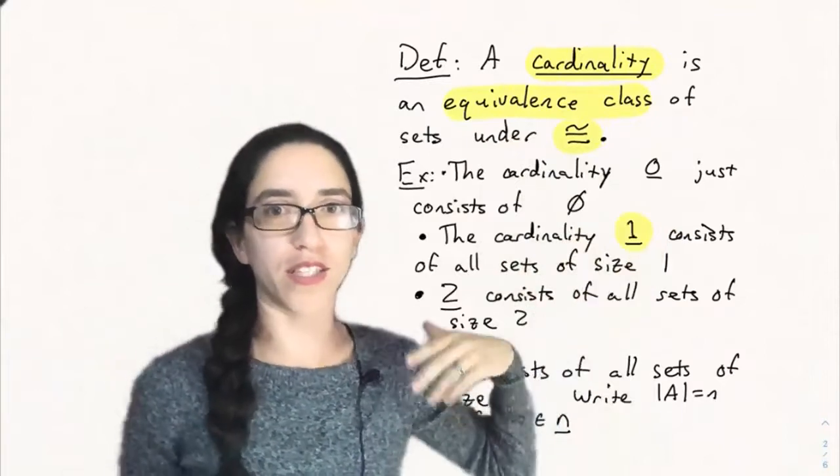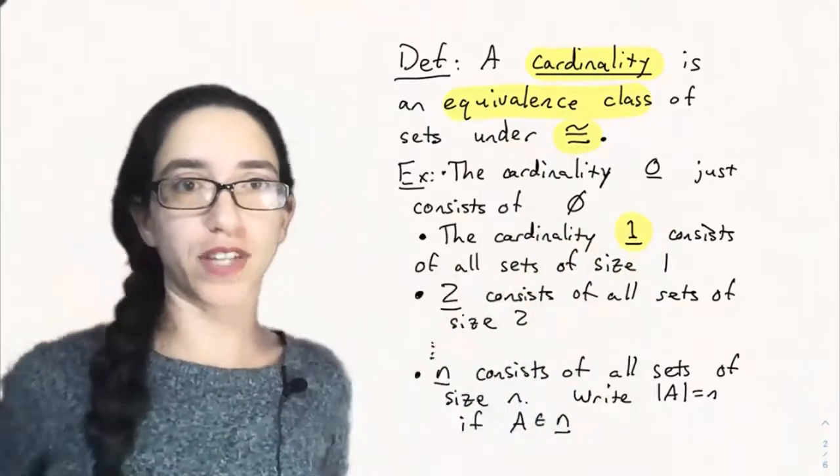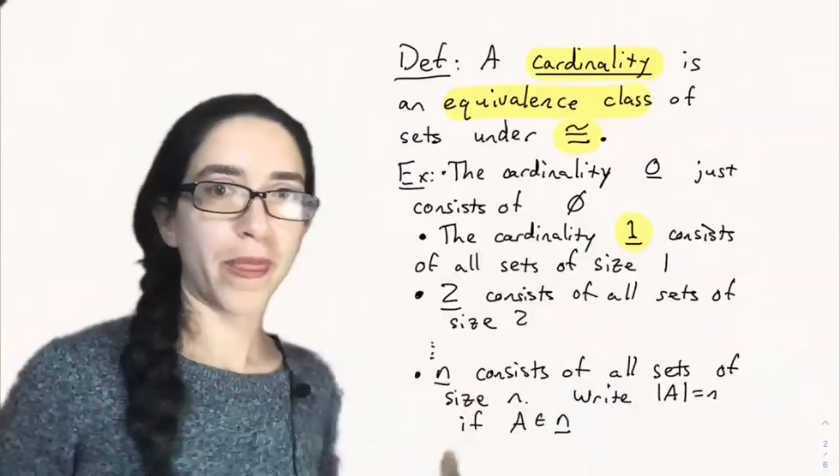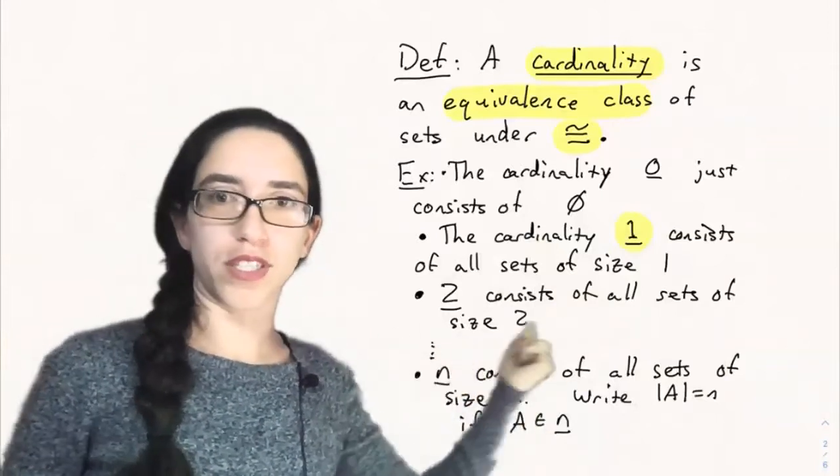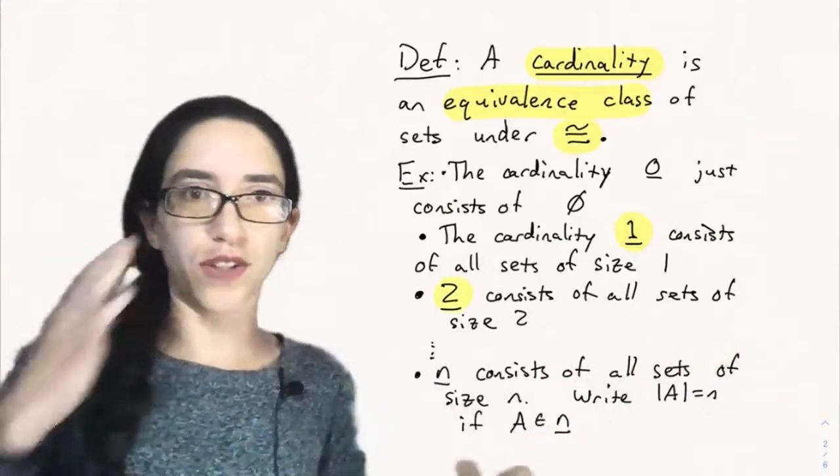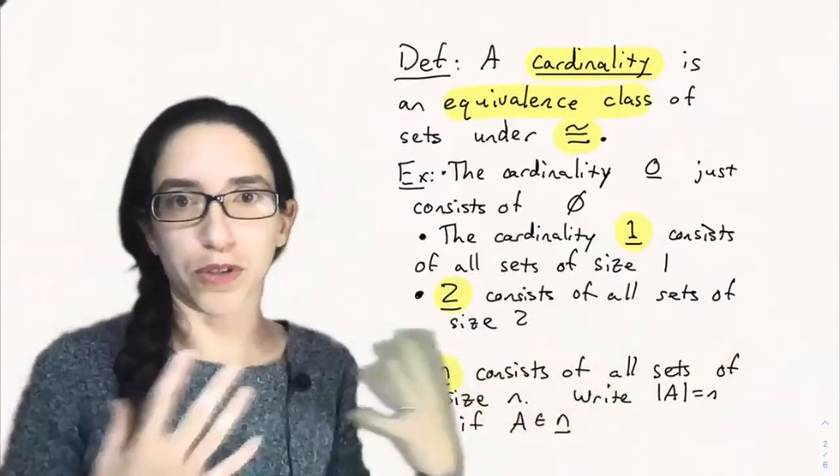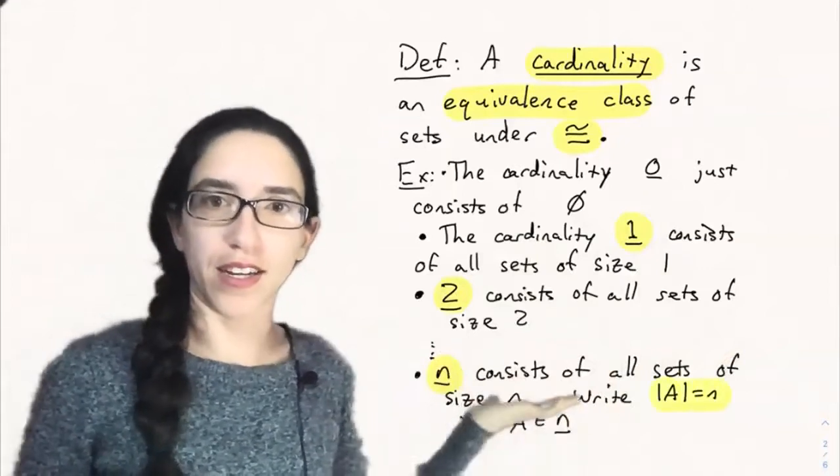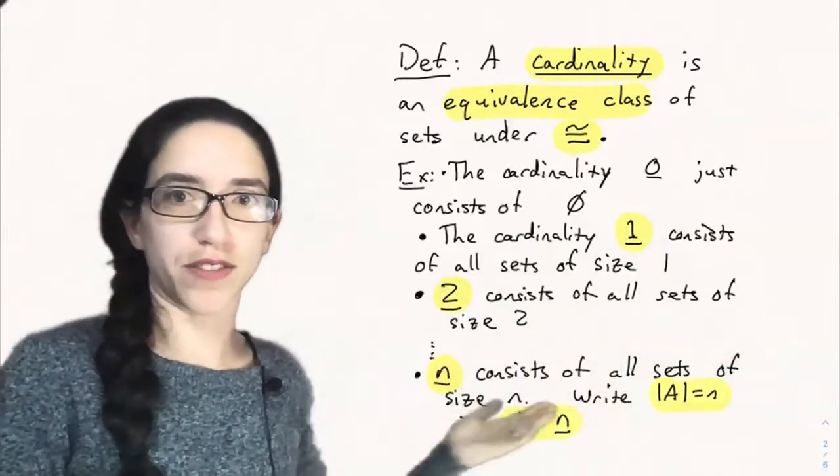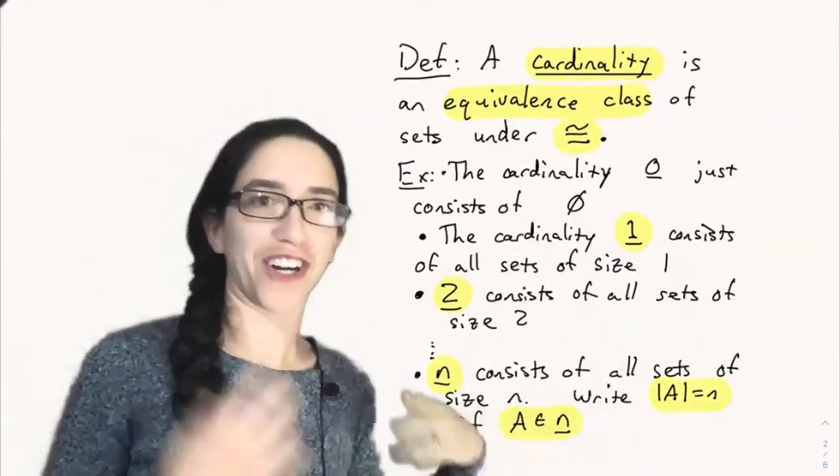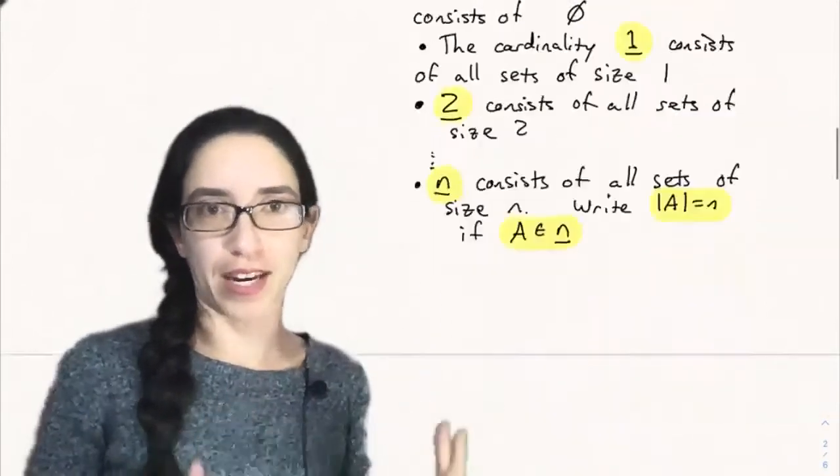The cardinality of one consists of all sets of size one. That entire class of sets is one cardinality. And similarly two consists of the class of all sets of size two. It's an enormous number of sets. Any two things represents the number two. Similarly n is the class of all sets of size n and we write |A| equals n if a is in that cardinality, if it's a member of that equivalence class.